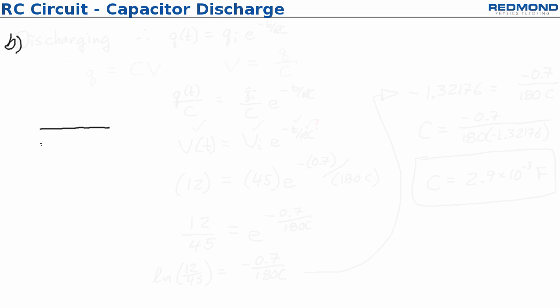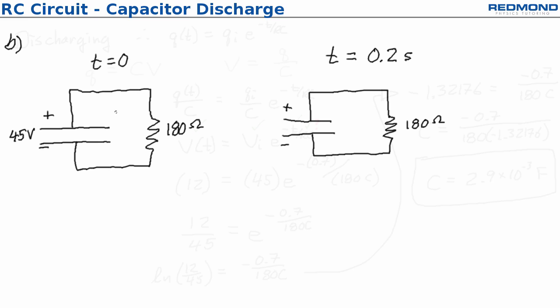Part B asks to find the current through the resistor at t equals 0.2 seconds. So it's a different time than in part A. The current will flow clockwise as this circuit is drawn and at t equals 0.2 seconds that would still be true. So we have current flowing clockwise.